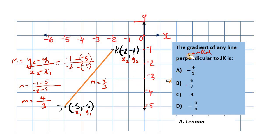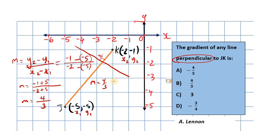But that's not what we were asked. We were asked to find the gradient of a line that is perpendicular. Perpendicular means that the gradients will be the negative reciprocal of each other. A line running perpendicular to this one will meet or pass through it at 90 degrees. If the gradient of this line is 4 thirds, the gradient of the perpendicular line will be its negative reciprocal.